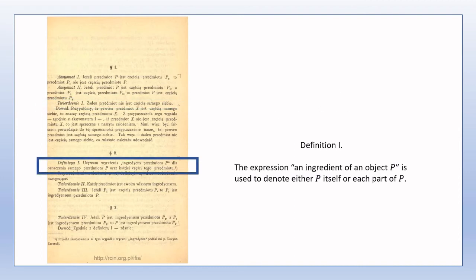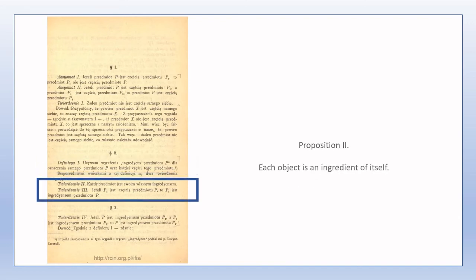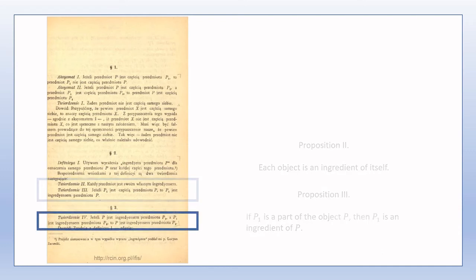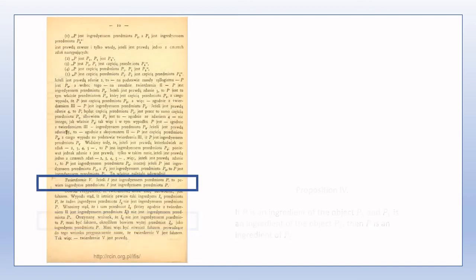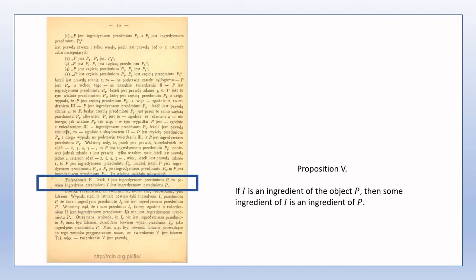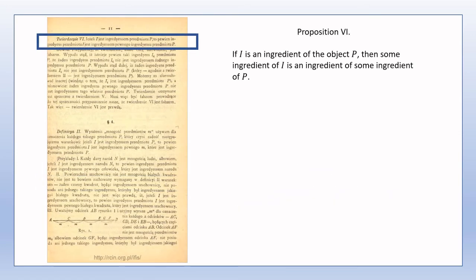Section 2 introduces the term 'ingredients', and some immediate propositions which follow from this definition. Section 3 shows that 'ingredients' is a transitive relation, and a couple of propositions — 5 and 6 — which seem very similar to Proposition 4, are proved. Here we start to see more of the structure of objects in terms of their ingredients.